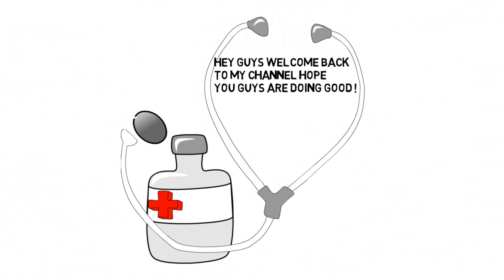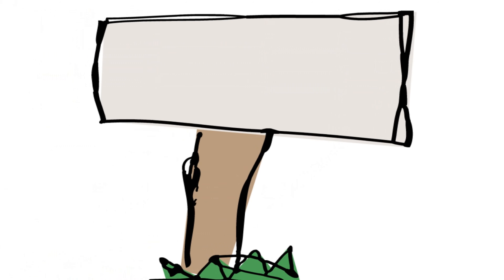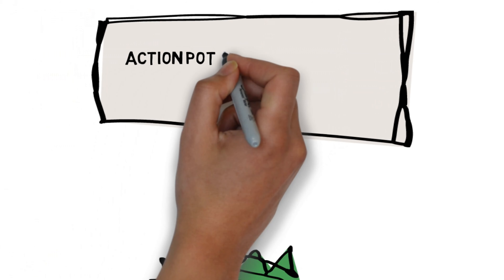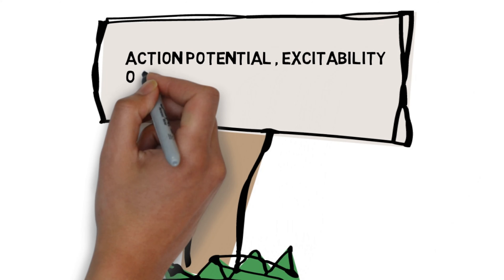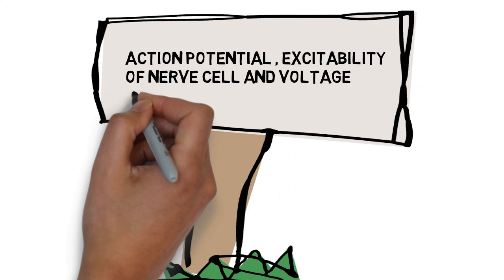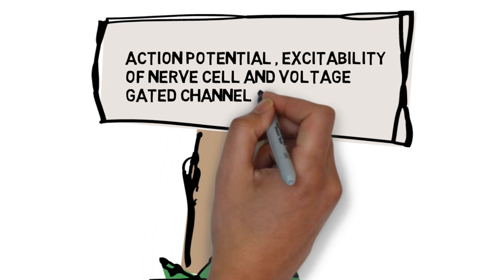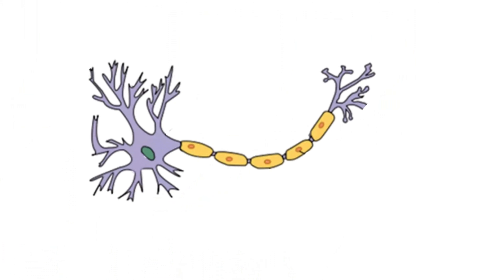Hey guys, welcome back to the channel, hope you guys are doing good. Today we will study about the action potential, excitability of a nerve cell and voltage-gated channels. So let's start with the basic structure of a nerve cell.